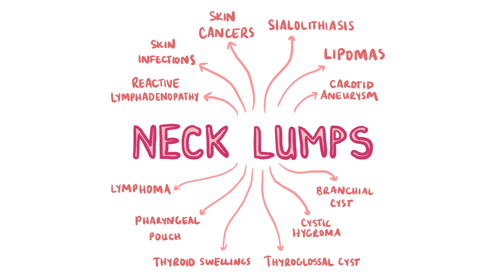A pulsatile mass found on the lateral neck is likely to be a carotid aneurysm. A patient with rubbery, raised lymph nodes with a history of night sweats, fever, weight loss, and splenomegaly may point to a diagnosis of lymphoma — an urgent referral on the cancer pathway is essential. A neck mass that gurgles when palpated and is associated with halitosis, dysphagia, recurrent aspiration, and a chronic cough points to a diagnosis of a pharyngeal pouch.